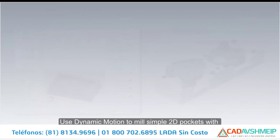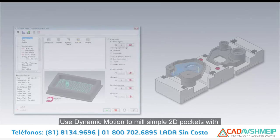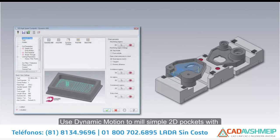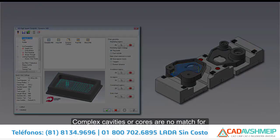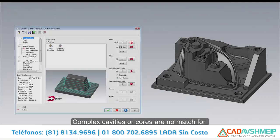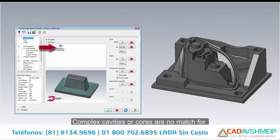Use dynamic motion to mill simple 2D pockets with ease using MasterCAM's 2D High Speed Dynamic Mill Toolpath. Complex cavities or cores are no match for MasterCAM's Surface High Speed Dynamic OptiRough toolpath.